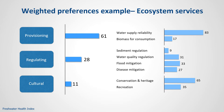This is an example of the final result of a weighting exercise. On the left, you can see the relative importance stakeholders collectively give to the three main types of services. In this particular group of stakeholders, much more value is given to provisioning services than to the other two groups. On the right, there is the relative importance broken down to specific services in each of the three major groups. For provisioning services, for example, stakeholders value water supply reliability much more than biomass for consumption.